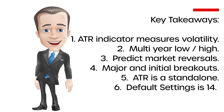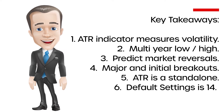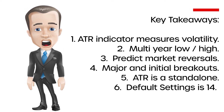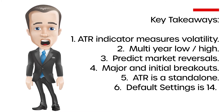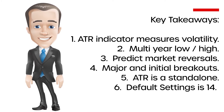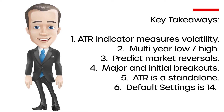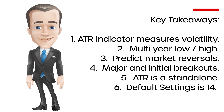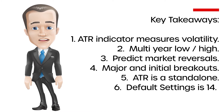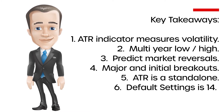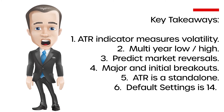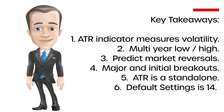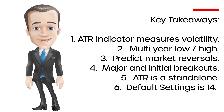Some key takeaways for the ATR before we get started: the ATR indicator measures volatility; multi-year highs and lows are very important; this indicator can predict market reversals; low or high ATR values could lead to major initial breakouts; each reading or level of the ATR is a standalone, so every stock will have a different ATR level. Default settings are usually 14 days, with some traders using 14, 20, and 22 days.